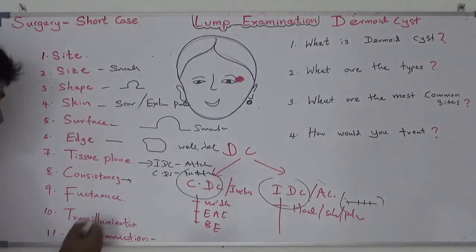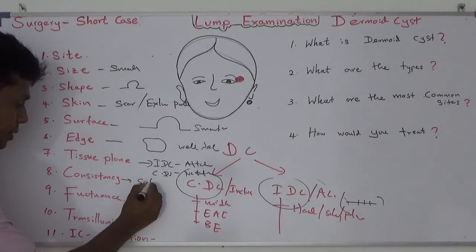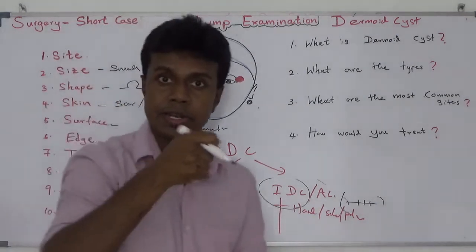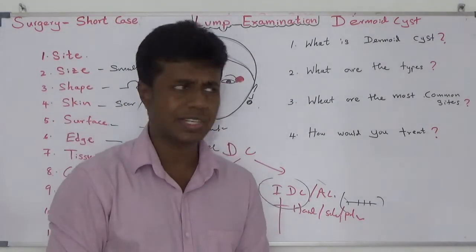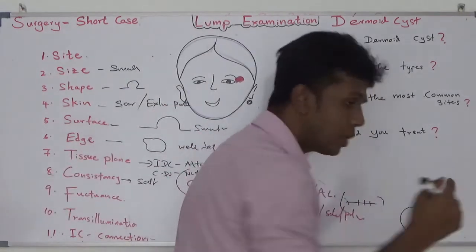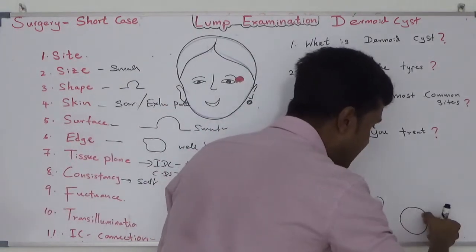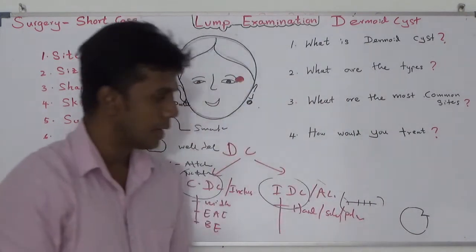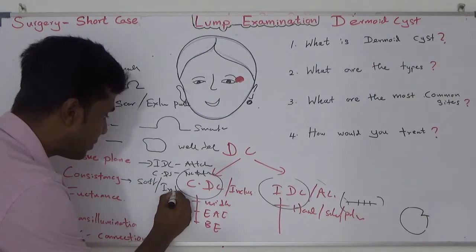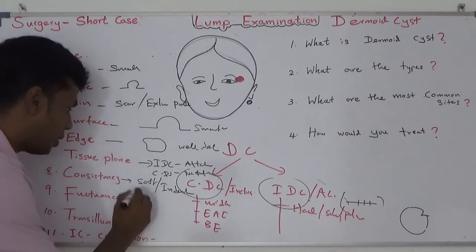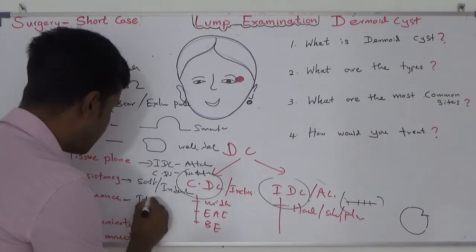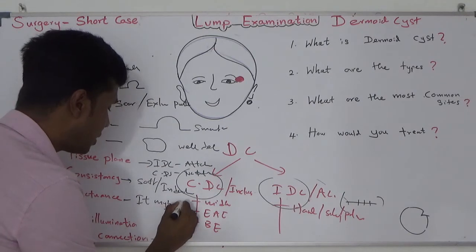The consistency of a dermoid cyst is usually soft. You can make an indentation using your nail, and it will remain for a few minutes. The cyst may also fluctuate.